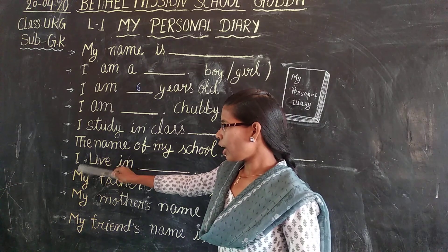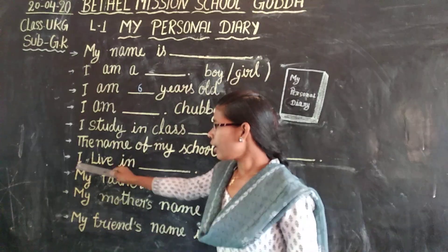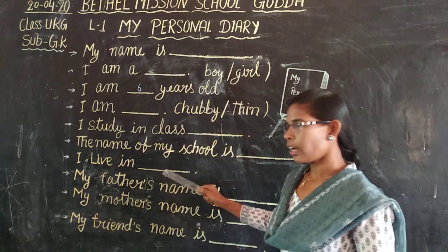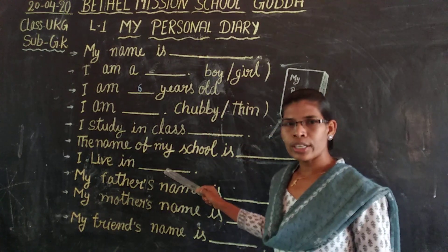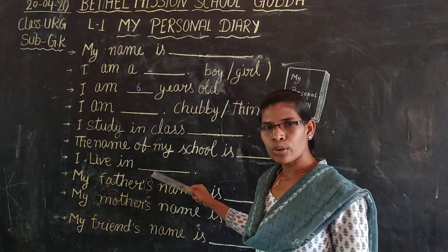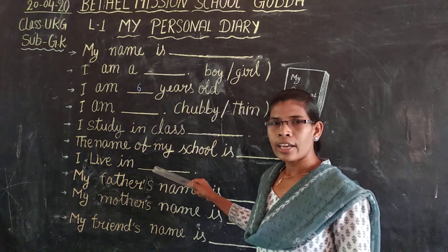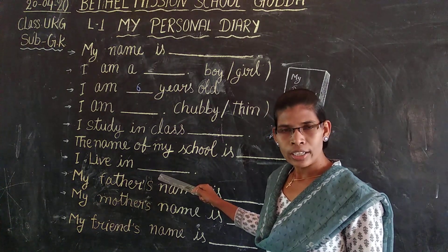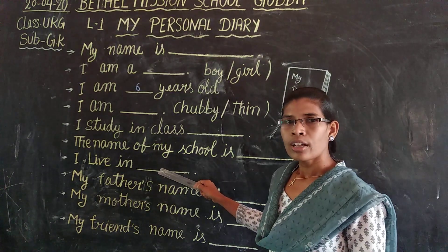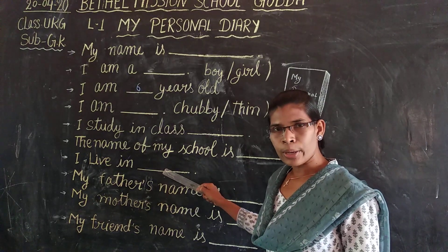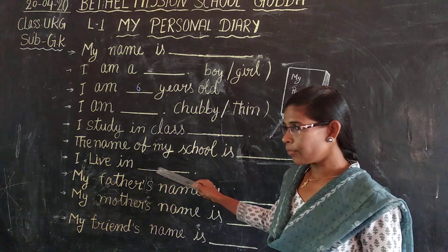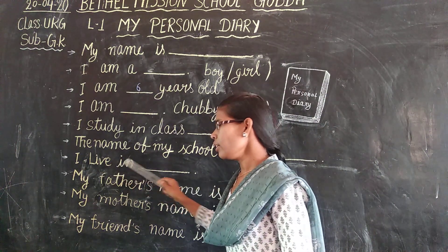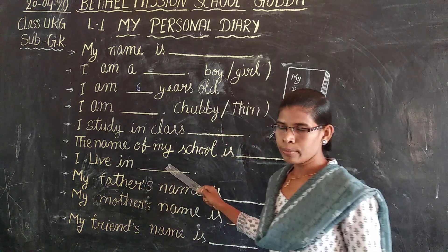Now next line: I live in Gota. Where do you live? You live in Gota. Any village name, wherever you are living, you have to write your place name here. I live in Gota.